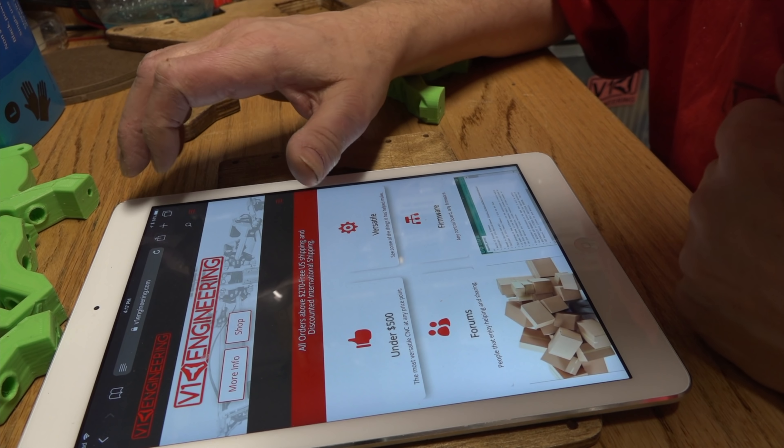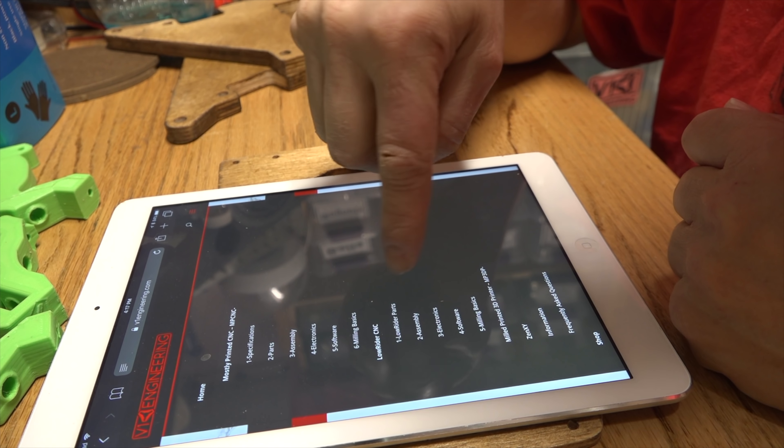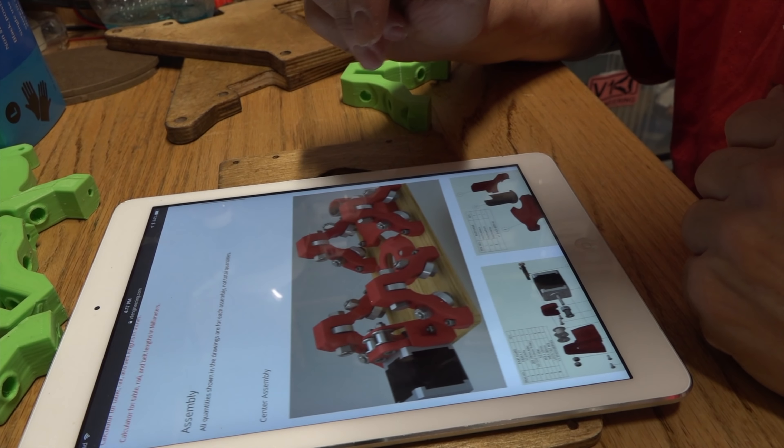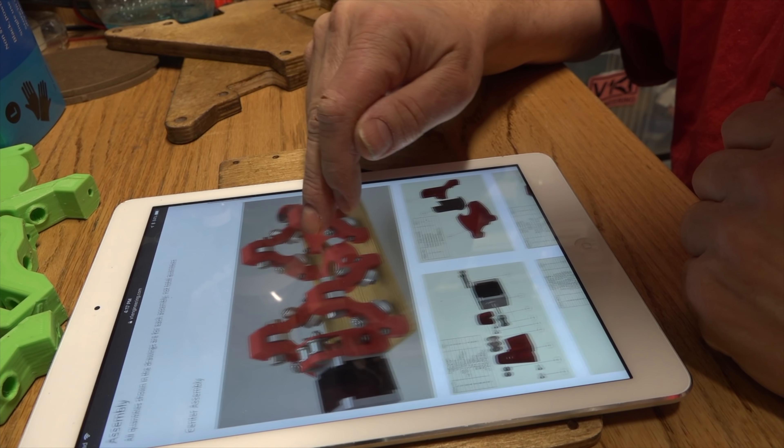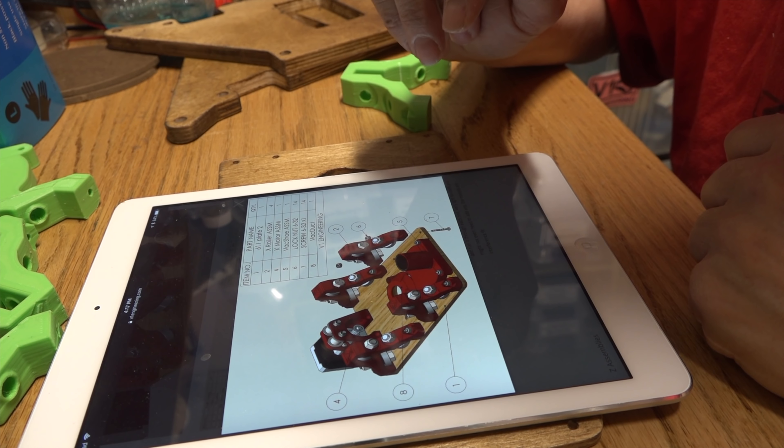Alright, here I am at v1engineering.com. I'm going to flip into the Lowrider assembly and take a look. Here's the first part, and this is the one I'm interested in at the moment. Of course, we've got to put bearings on all of those, so I suppose we should do that first.